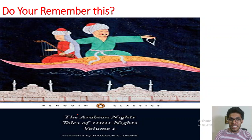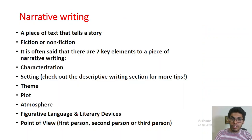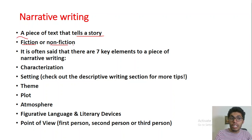You may remember 'Alif Laila Ki Kahaniyan' — the Arabian Nights, the tales of One Thousand and One Nights. That is something related to narrative writing. A narrative is basically a piece of text that tells a story. The story can be fictitious or non-fictitious — fiction means an unreal story and non-fiction means a real story. There are said to be seven key elements to a piece of narrative writing.